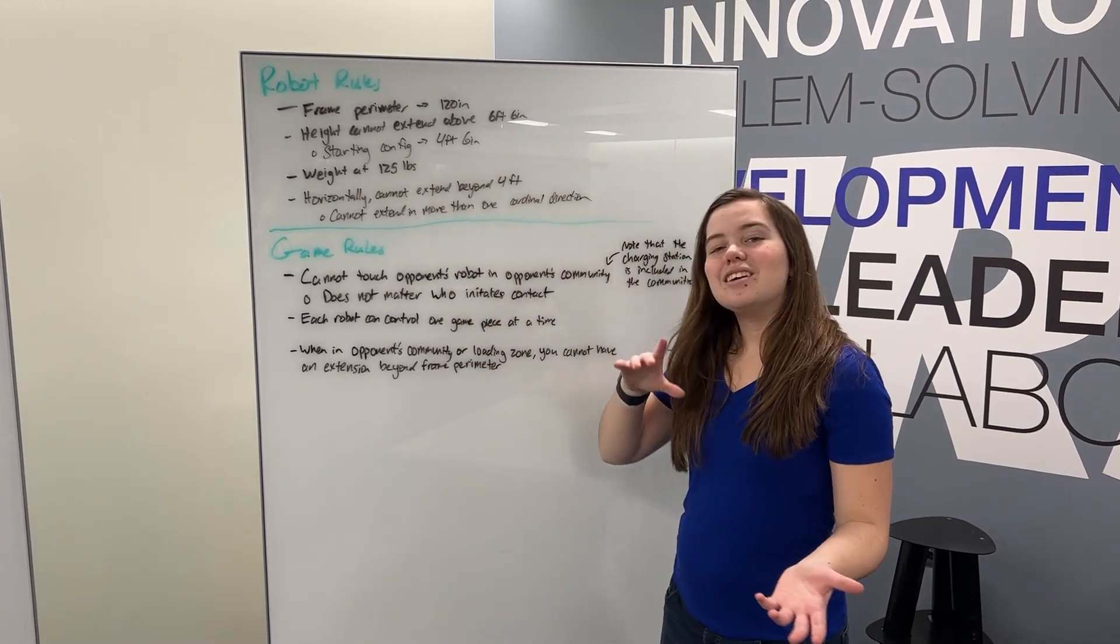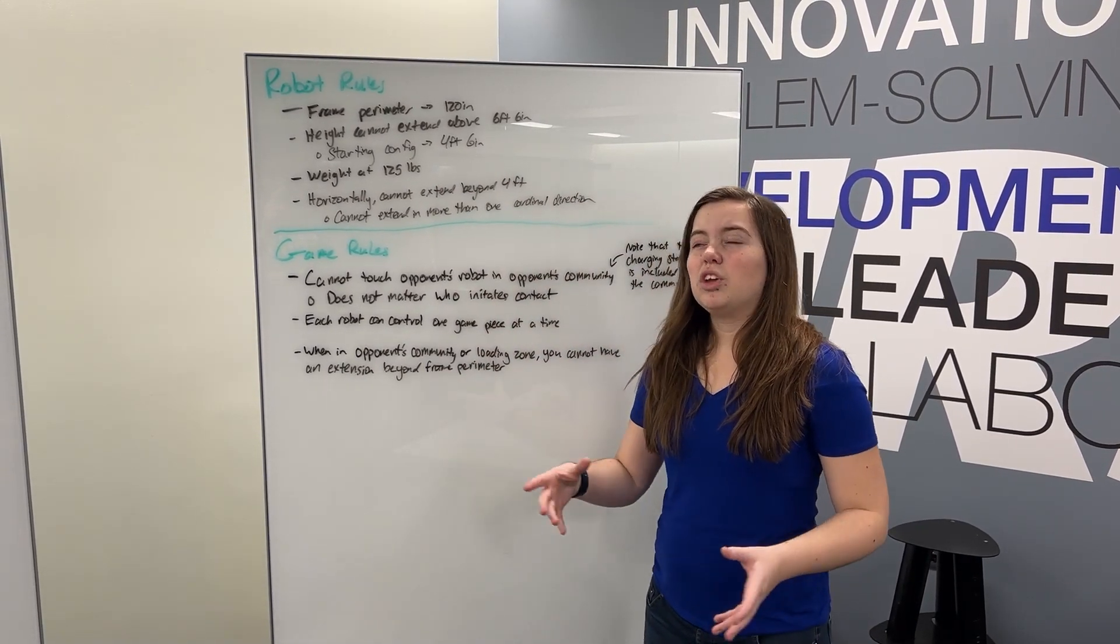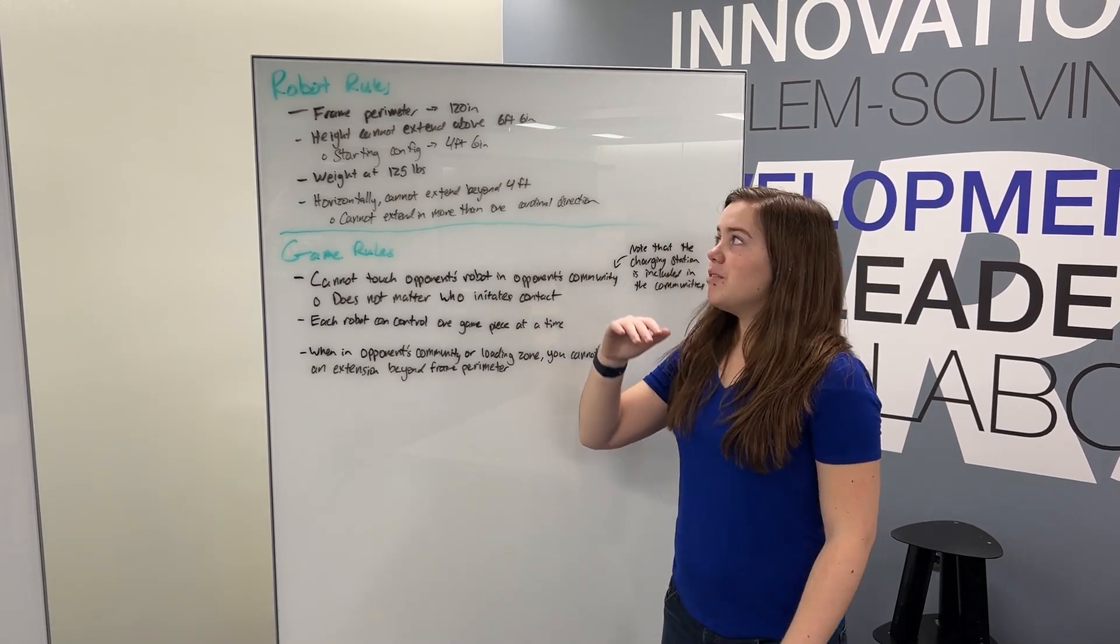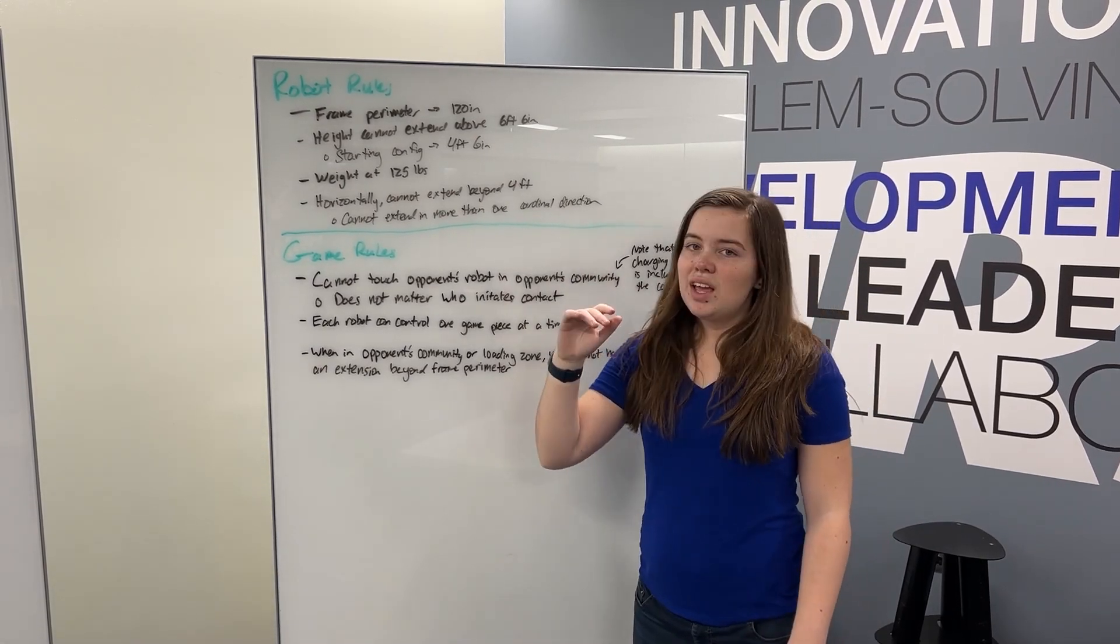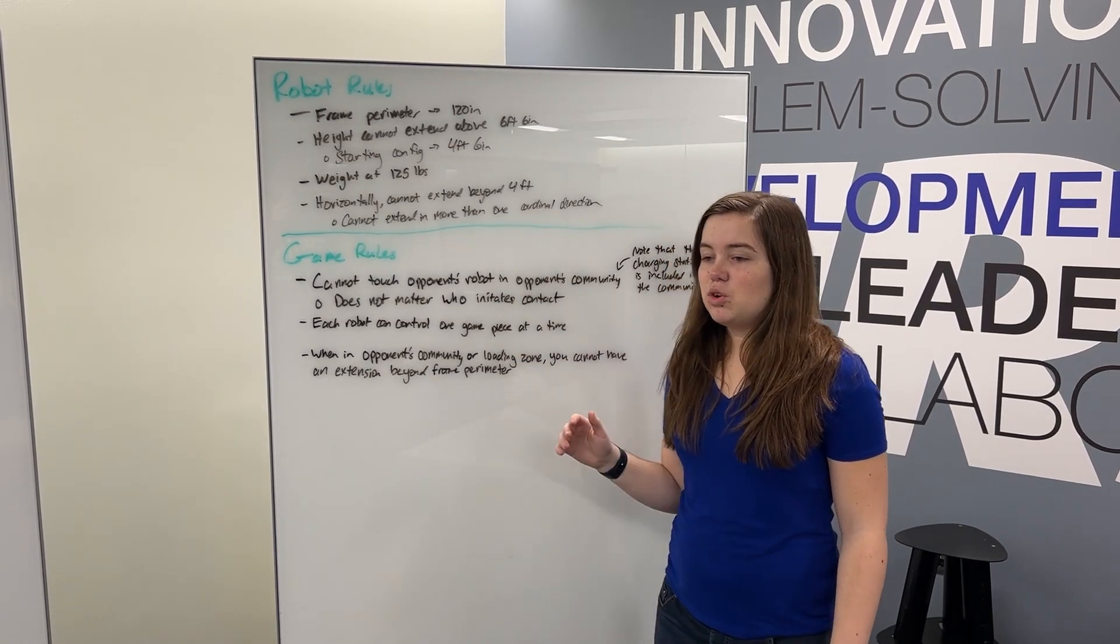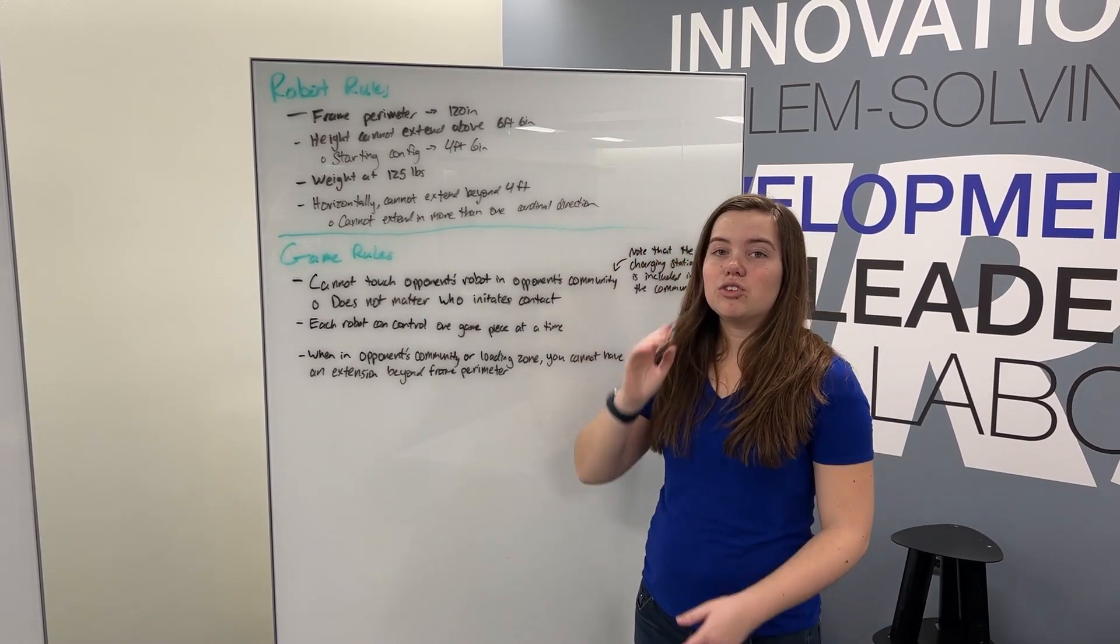And then we get to the extensions part of the whole construction. So your height of your robot cannot extend above 6 feet 6 inches and your starting config must be within 4 feet 6 inches. So you can have some pretty significantly tall robots this year.